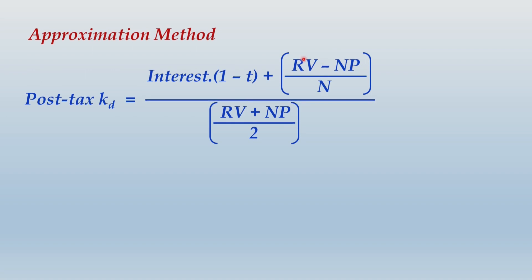For example, if the redeemable value is ₹12 lakhs and net proceeds on issue of debt is ₹10 lakhs, then ₹12 lakhs minus ₹10 lakhs equals ₹2 lakhs, which is the excess repayment amount and represents a cost. That ₹2 lakhs is not the cost of any one year — it is divided by the number of years, say 5 years, giving an average annual cost. The denominator is the average of RV and NP: (12 + 10) / 2 = ₹11 lakhs.